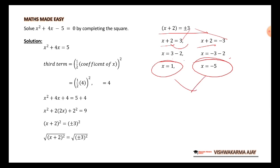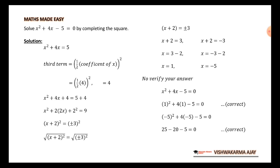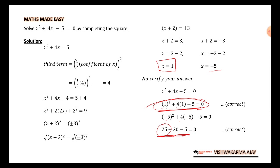To verify, substitute the values of x into the main equation and check that LHS = RHS. For x = 1: 1² + 4(1) − 5 = 1 + 4 − 5 = 0. Correct. For x = −5: (−5)² + 4(−5) − 5 = 25 − 20 − 5 = 0. Correct. Hence both x = 1 and x = −5 are verified.